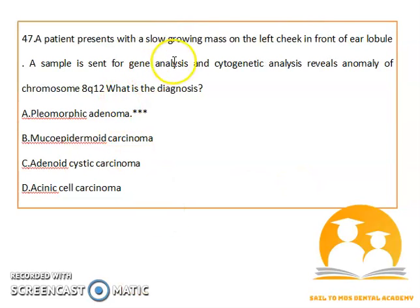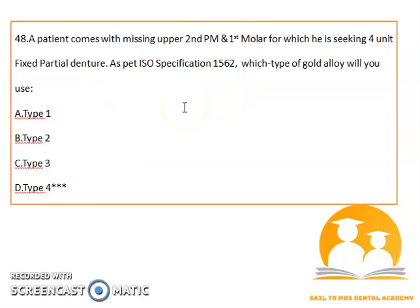A patient presents with a slow-growing mass on the left cheek in front of the ear lobe. A sample is sent for gene analysis, and cytogenetic analysis reveals an anomaly of chromosome 8q12. The diagnosis here is pleomorphic adenoma.